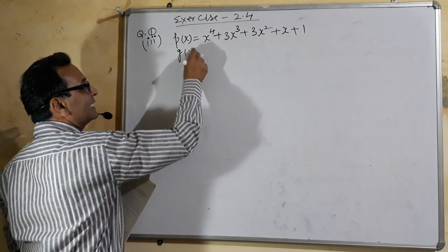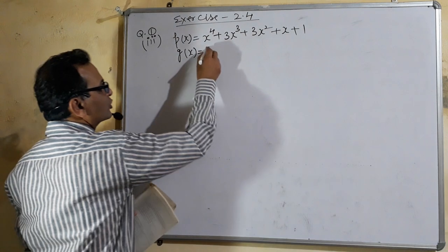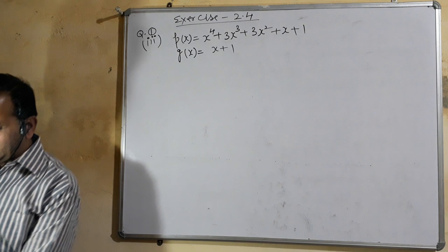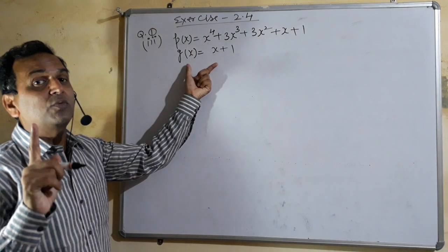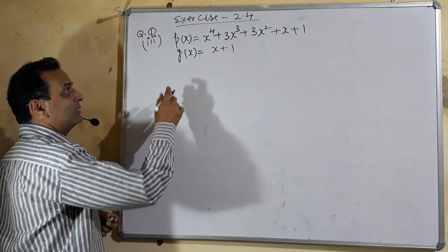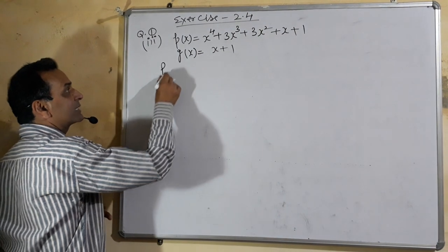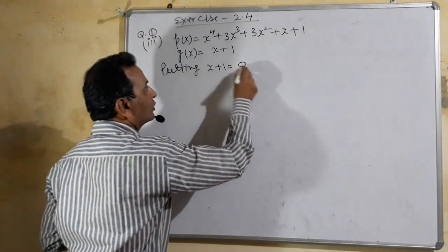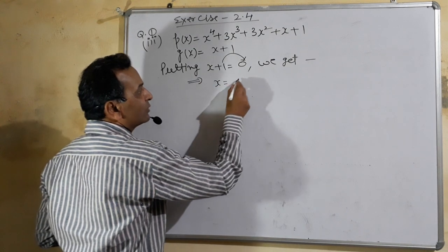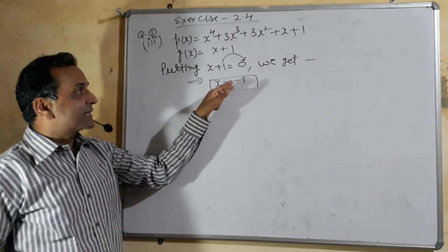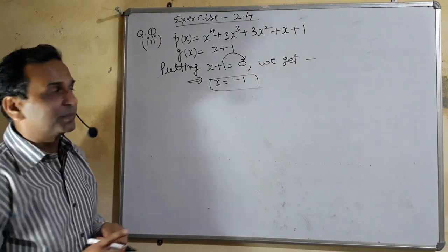Denote the divisor as G(x). So divisor G(x) = x + 1. We have mentioned two things: first, polynomial P(x); second, divisor G(x). Following the same method as in Exercise 2.3 — just put the value of the divisor equal to 0 and find the value of the variable. Putting x + 1 = 0, we get x = -1. This value of x will be put into the polynomial on both left-hand side and right-hand side.